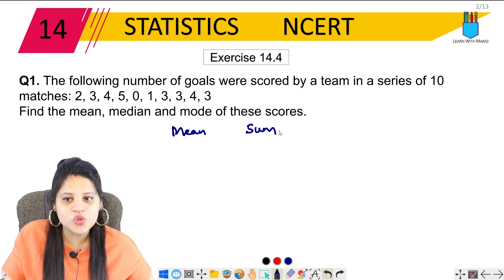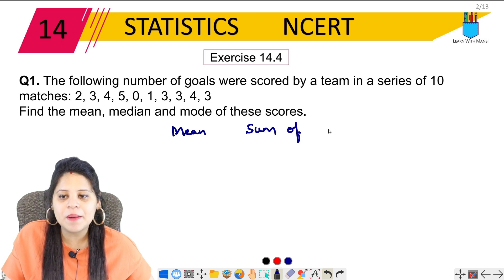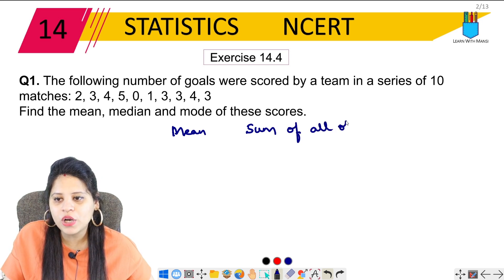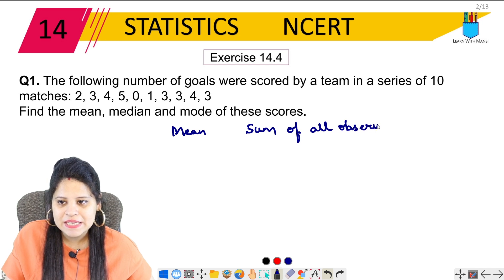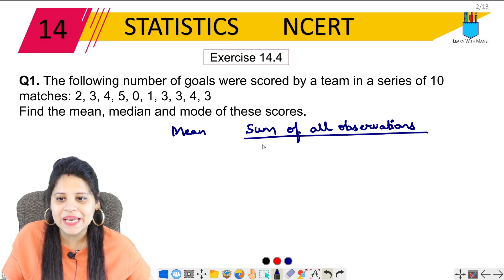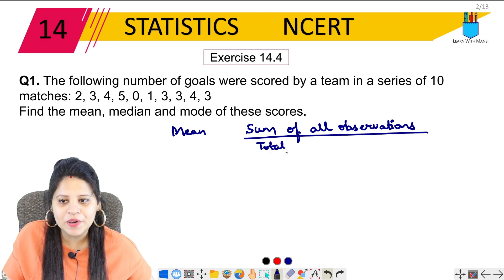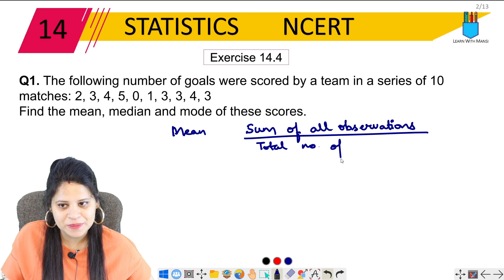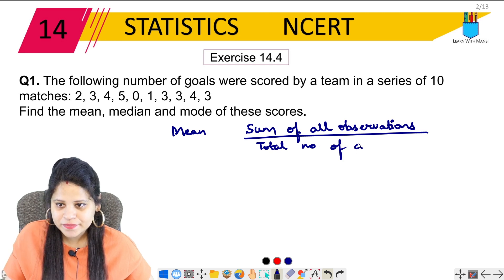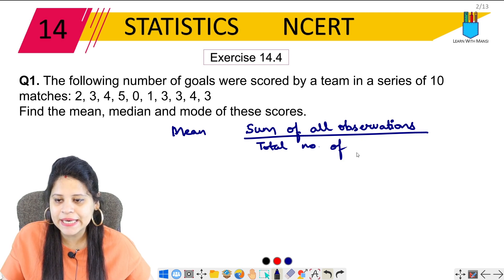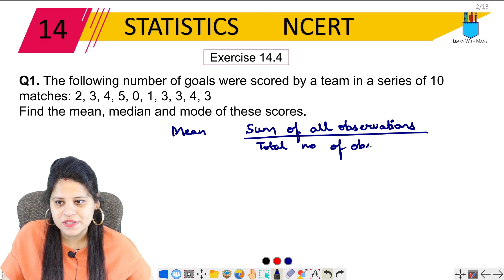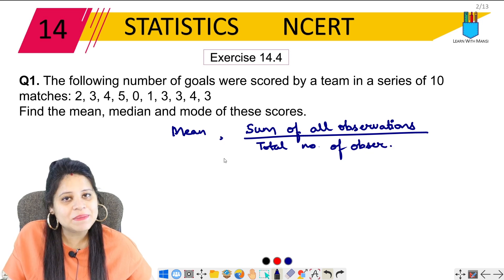Simple, sum of all observations, whatever we have, the sum upon total number of observations. Okay, I'll write this again. Total number of observations. Clear. We will start with the mean.